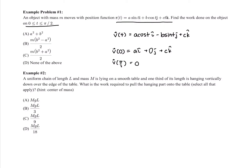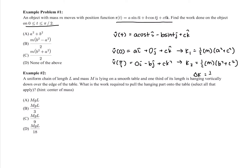At t equals pi over 2, cosine of pi over 2 is 0, so that's 0i minus bj plus ck. Then calculating kinetic energy: K1 equals one half m times (a squared plus c squared), and K2 equals one half m times (b squared plus c squared). Taking the difference K2 minus K1, the c-squared terms cancel, giving one half m times (b squared minus a squared). So the answer is choice B.